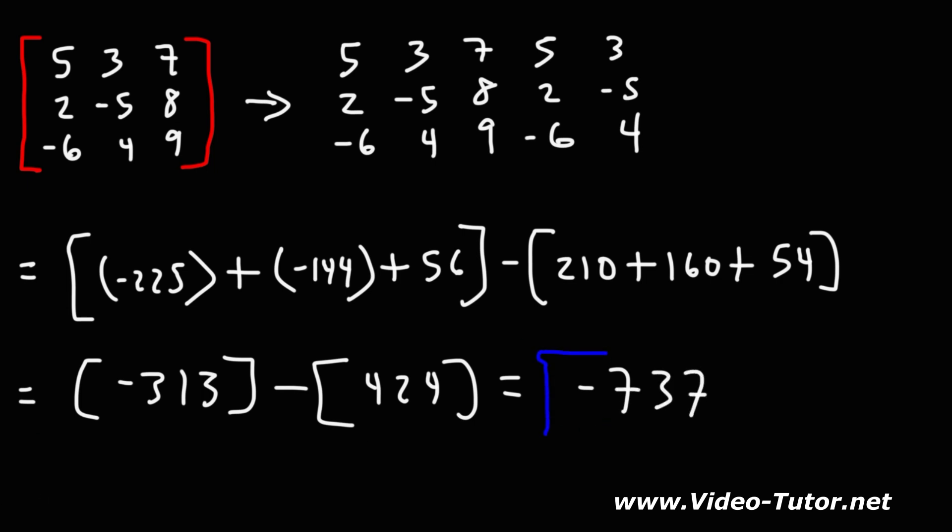Negative 313 minus 424 is negative 737. So, this is the answer. That is the value of the determinant of this 3 by 3 matrix. That's how you could find it quickly using this shortcut method.